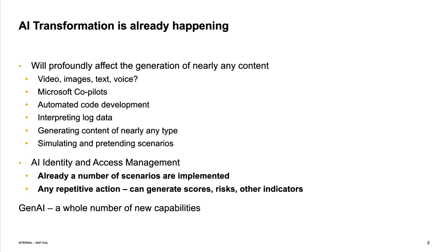I'm going to show you a screenshot of how we're able to generate the UI for the access request API that we expose for access control. You can do that literally with 30 seconds on Google BARD or any of the other tools — it will automatically generate a UI for our service that we expose to enable integration. It's a very simple UI, but you can generate it easily and quickly.